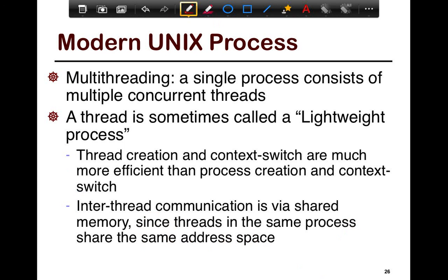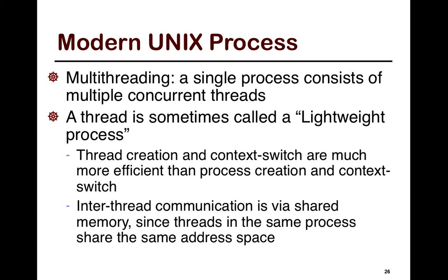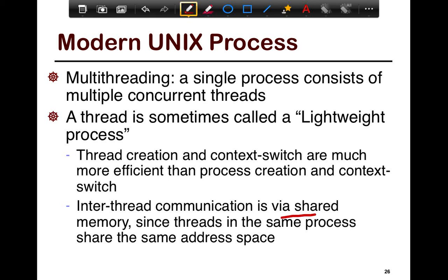In Unix terminology, a thread is sometimes called a lightweight process. Thread creation and context switches are much more efficient than process creation and context switches. Inter-thread communication happens transparently via shared memory, and since threads are in the same process and share the same address space, on thread switches you don't necessarily need to flush out the hardware caches and translation maps. This is one of the primary reasons why the context switch is more efficient.